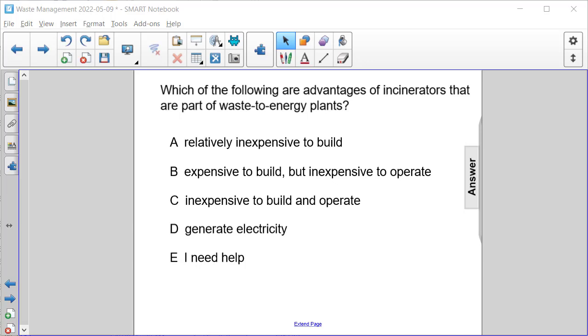Which of the following are advantages of incinerators that are part of waste-to-energy plants? A, they're relatively inexpensive to build. B, they're expensive to build but inexpensive to operate. C, they're inexpensive to build and operate. Or D, they generate electricity.